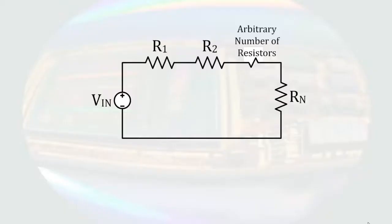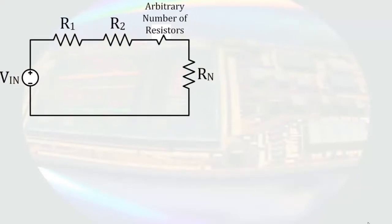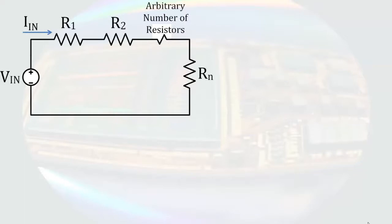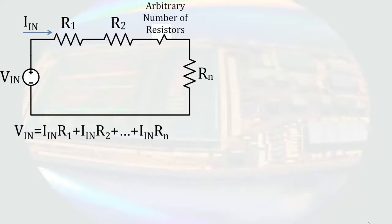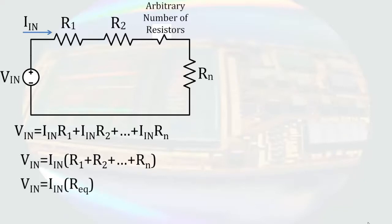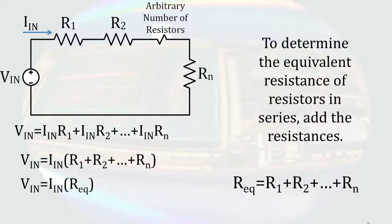Let's generalize this. If we take an arbitrary loop of series resistors R1, R2, etc., up to Rn, and define the current through all of them as IN, we can write that the input voltage equals the sum of the voltage drops across the resistors. By Ohm's Law, each of those terms is the resistance times IN. Since IN is common to all terms we can factor it out. Substituting R_eq for all the resistors, the equivalent resistance is simply the sum of all those individual resistors in series.